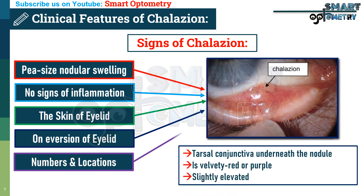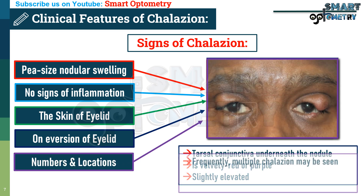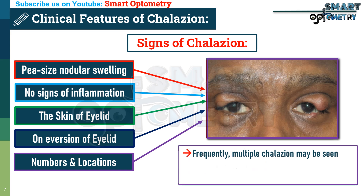On eversion of the eyelid, the tarsal conjunctiva underneath the nodule is velvety red or purple and slightly elevated. Regarding numbers and locations, frequently multiple chalazia may be seen involving one or more eyelids.